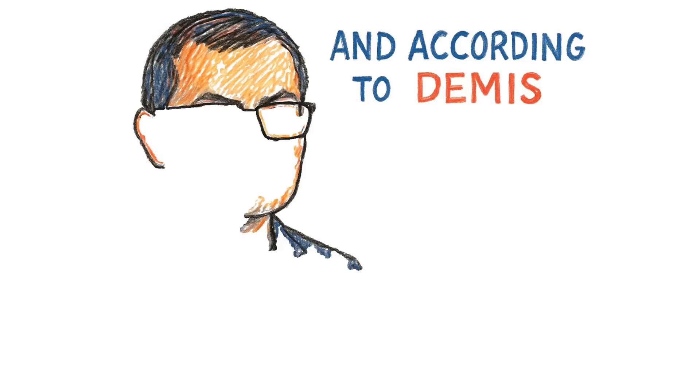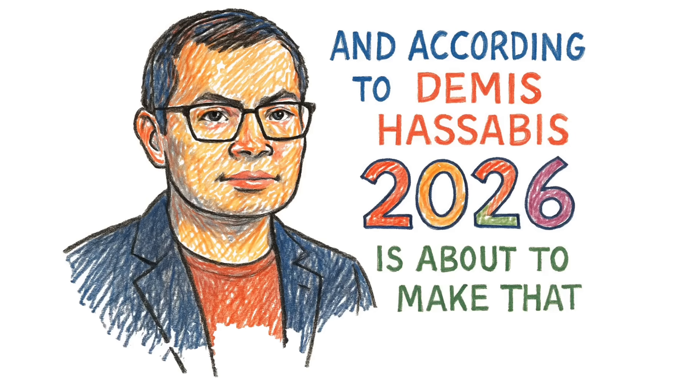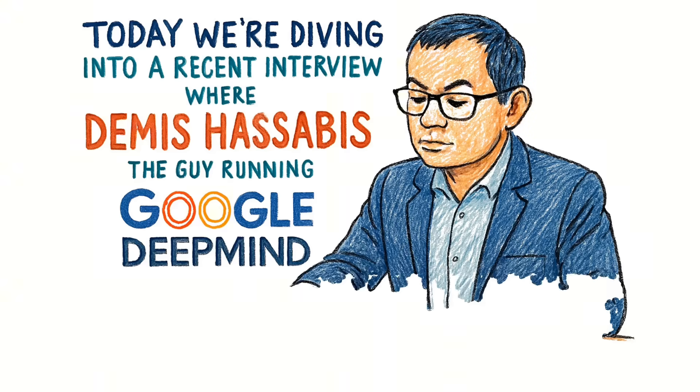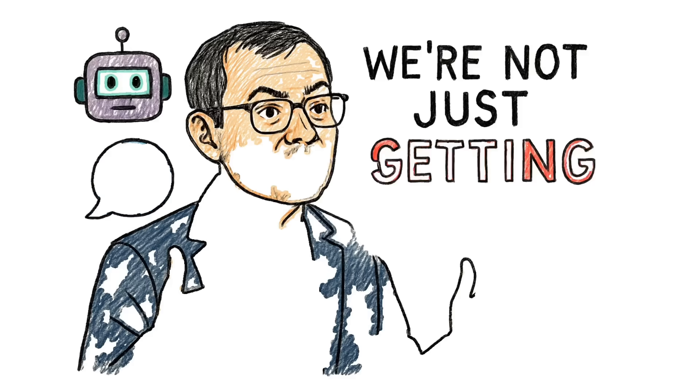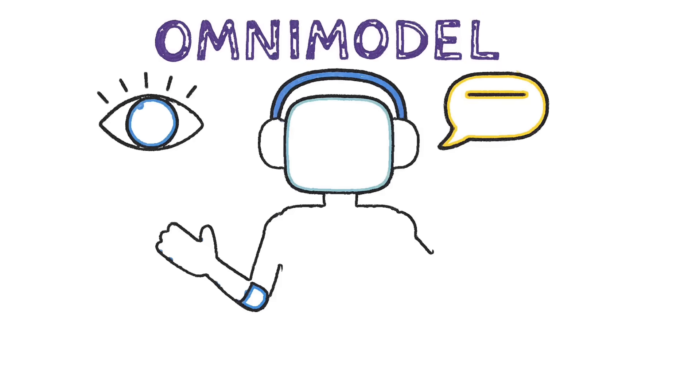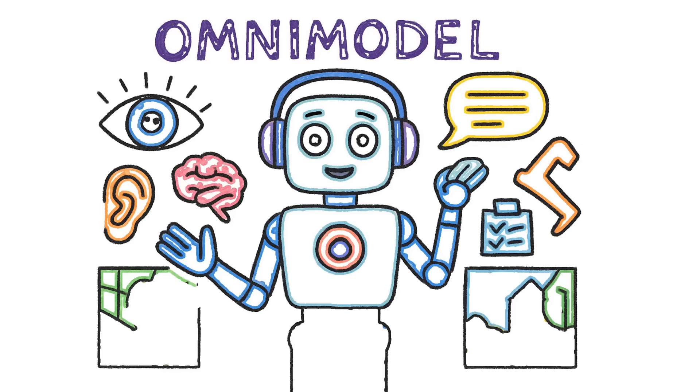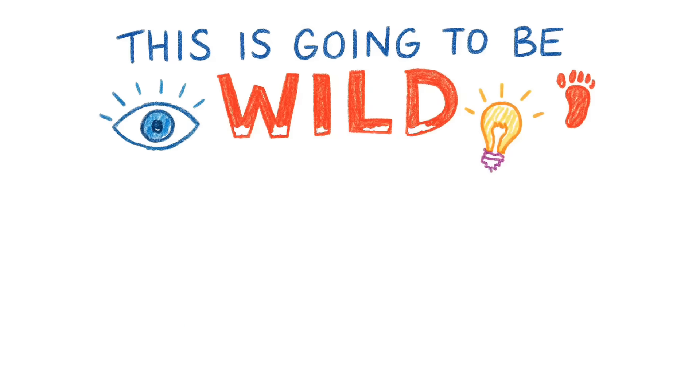And according to Google's AI boss, Demis Hassabis, 2026 is about to make that look like child's play. Today, we're diving into a recent interview where Demis Hassabis, the guy running Google DeepMind, basically sketched out the next 12 months of AI. And let me tell you, if he's even half right, we're not just getting smarter chatbots. We're getting omni-models, AI that can see, hear, speak, move, remember, plan, and even build entire worlds you can walk around in. Buckle up. This is going to be wild.